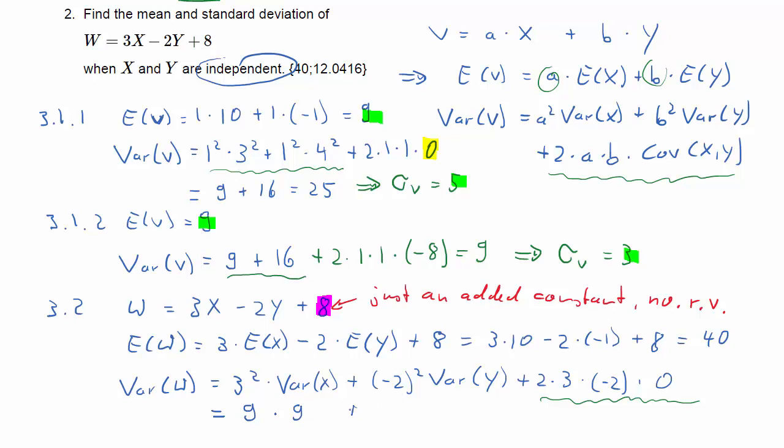So we get 9 times 9, which was the variance of X, plus 4 times 16, which was the variance of Y. So here we get 145.